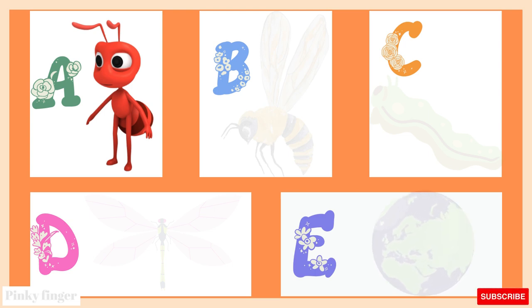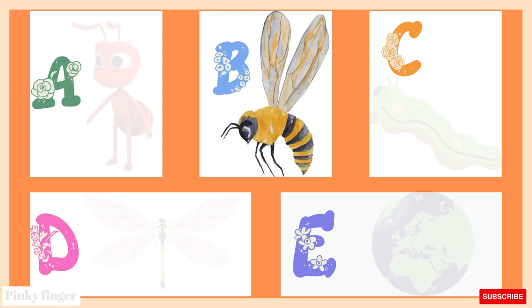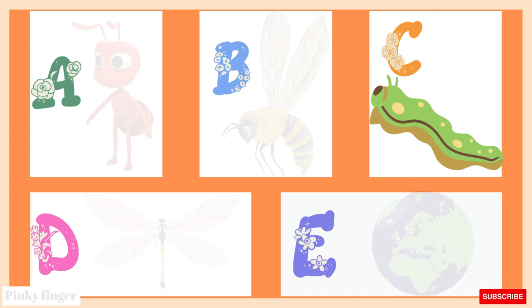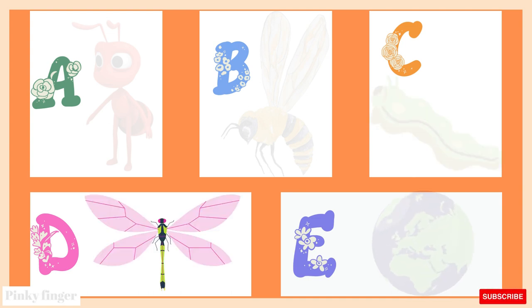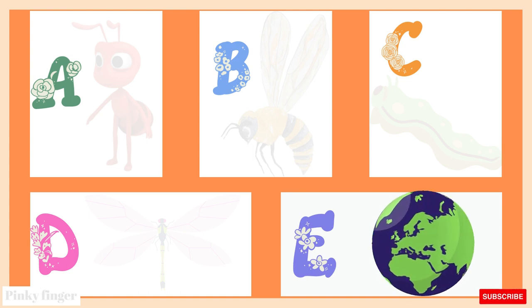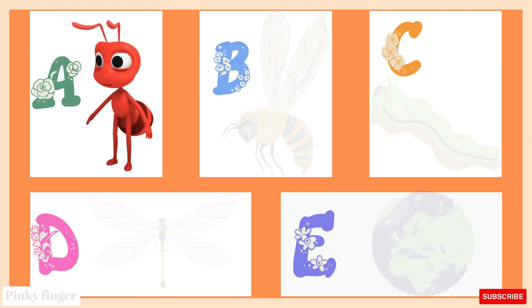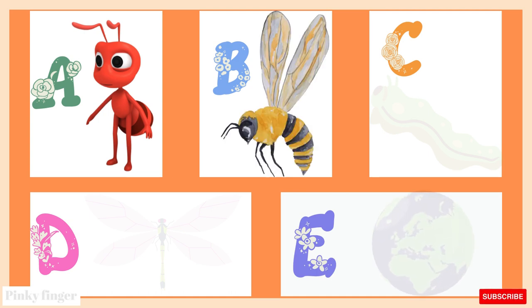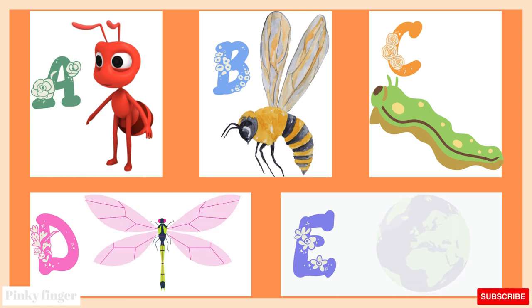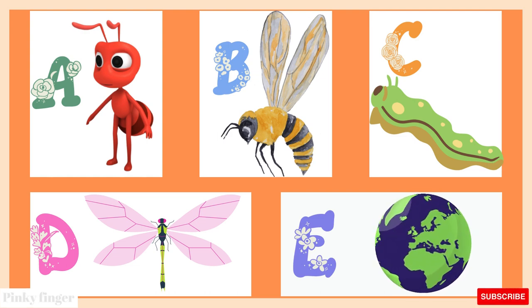A is for Ant. B is for Bee. C is for Caterpillar. D is for Dragonfly. E is for Earth.